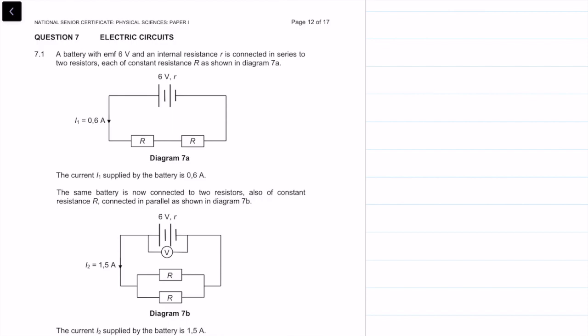A battery with an emf of 6 volts and an internal resistance of small r is connected in series with two resistors, each of the same resistance R.